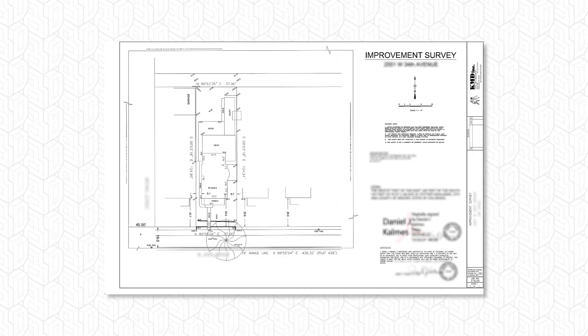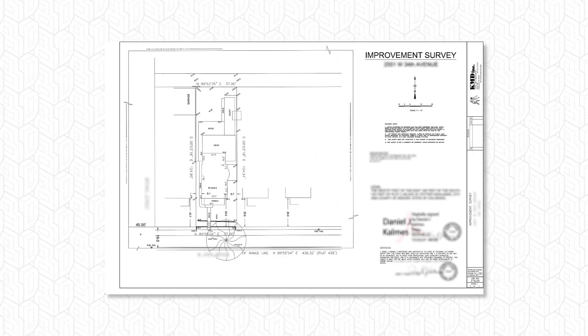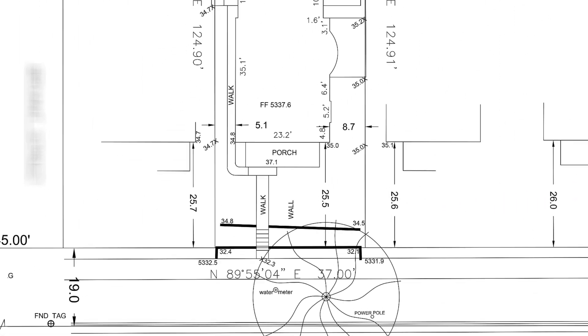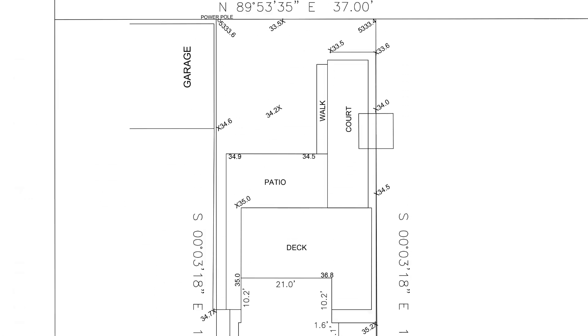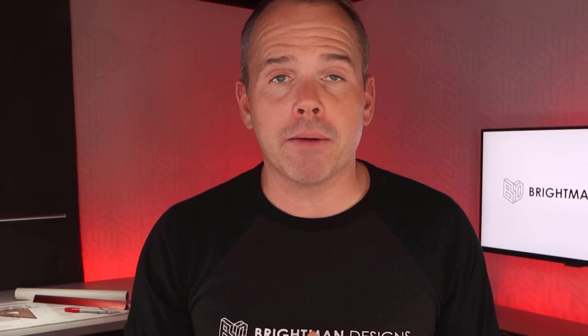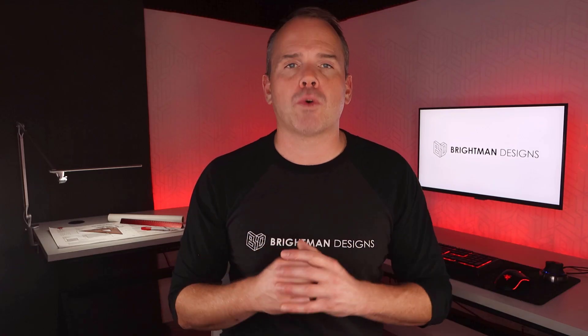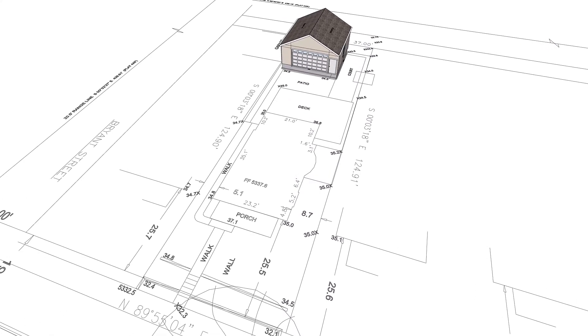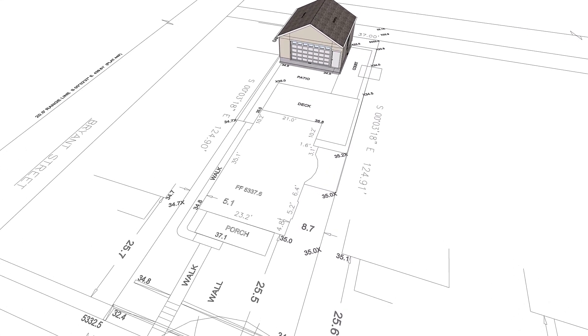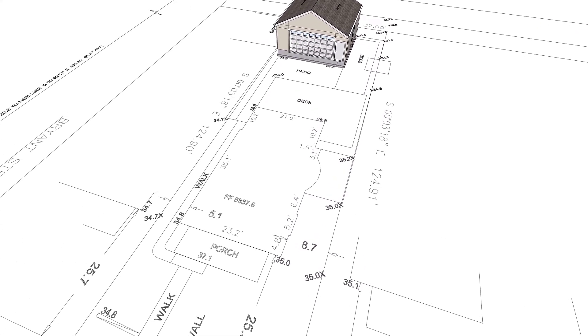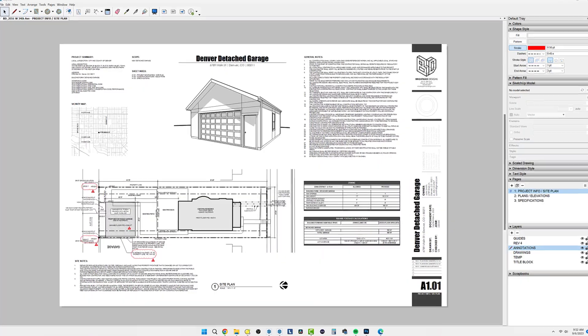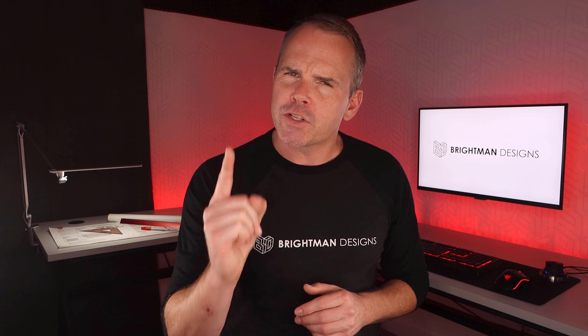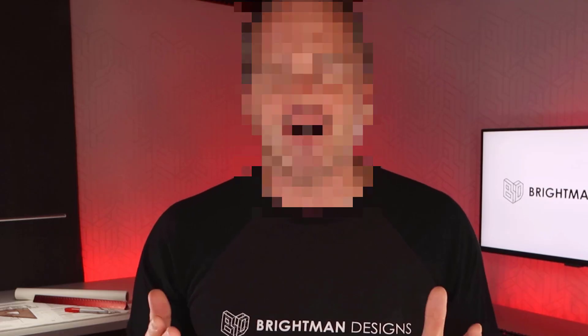Ever seen one of these? It's an improvement survey that I have to have in order to push my garage project through the city hoops. Can't make a move without it. I use the digital drawings from this survey to shape up my site model in SketchUp, and eventually my site plans in Layout. But first things first, I need this drawing in SketchUp as clean vector lines, not some fuzzy raster image.